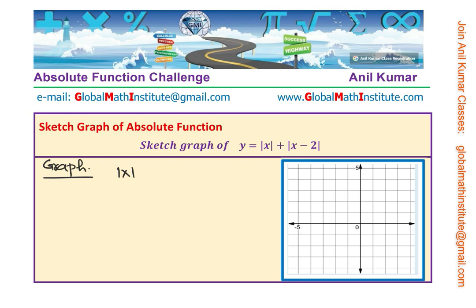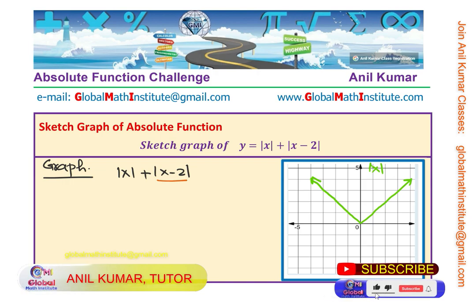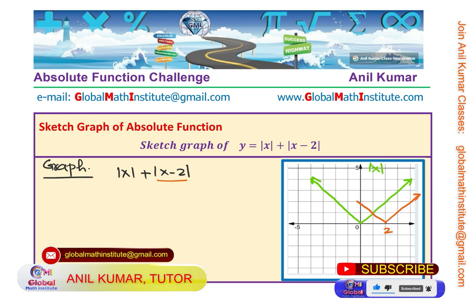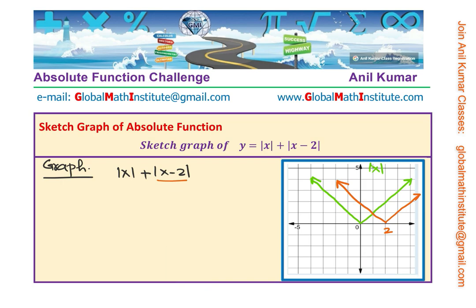Let us now graph y equals absolute value of x plus absolute value of x minus 2 by combining the two individual graphs. The first function, absolute value of x, has its vertex at 0 and goes up on both sides. The second function, absolute value of x minus 2, is the same shape but shifted two units to the right, with its vertex at 2.